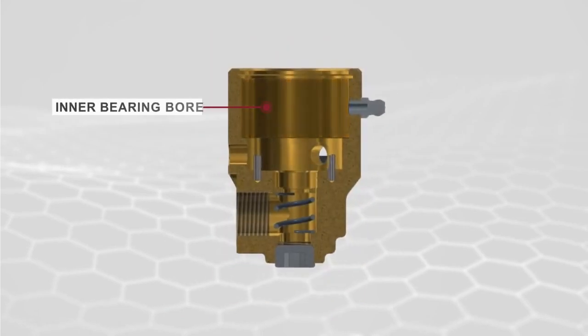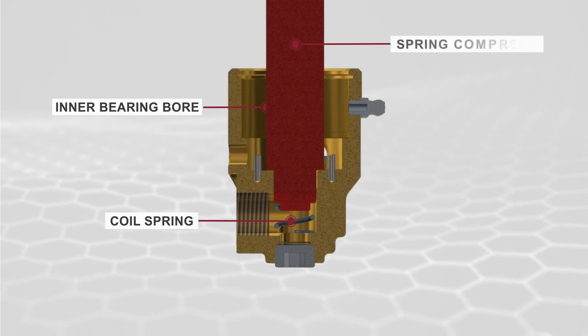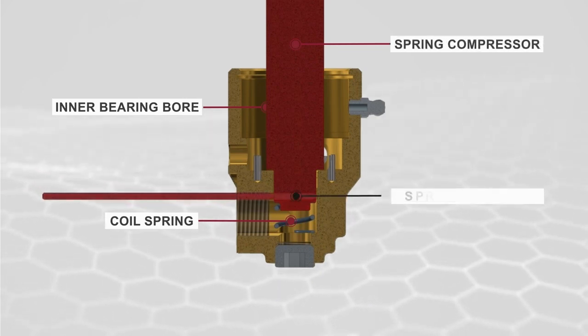Grease the housing bearing ball and insert the coil spring with the spring compressor until the spring retaining pin can be inserted through the entrance port.